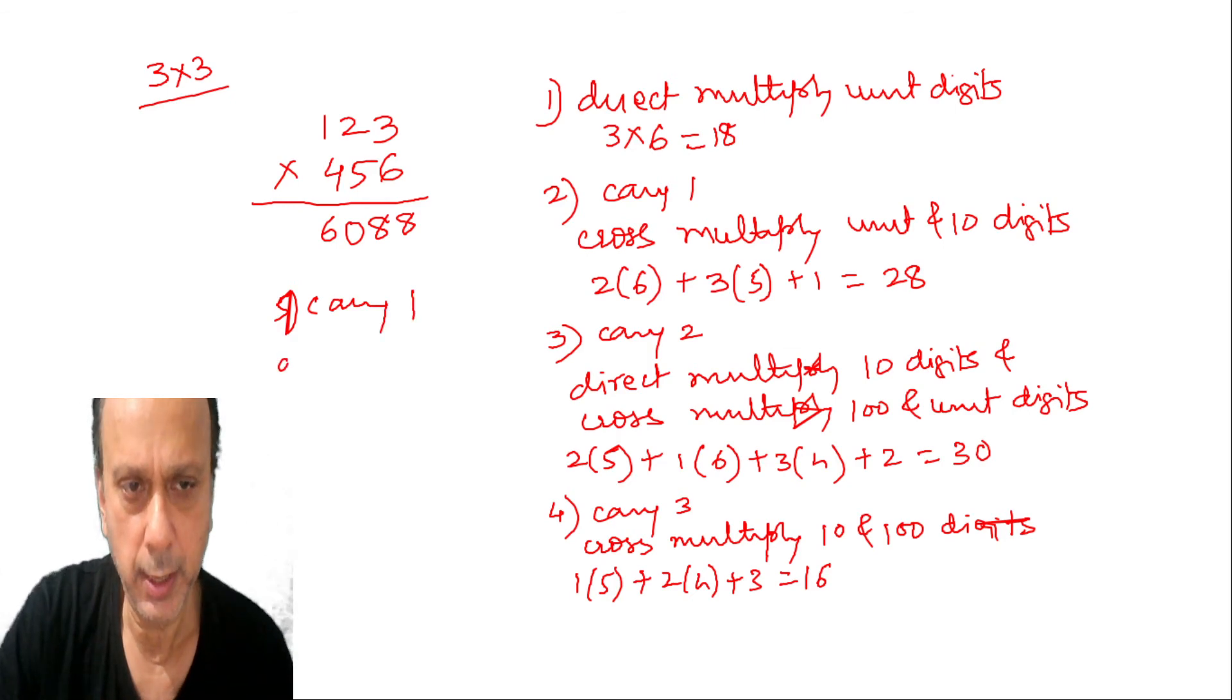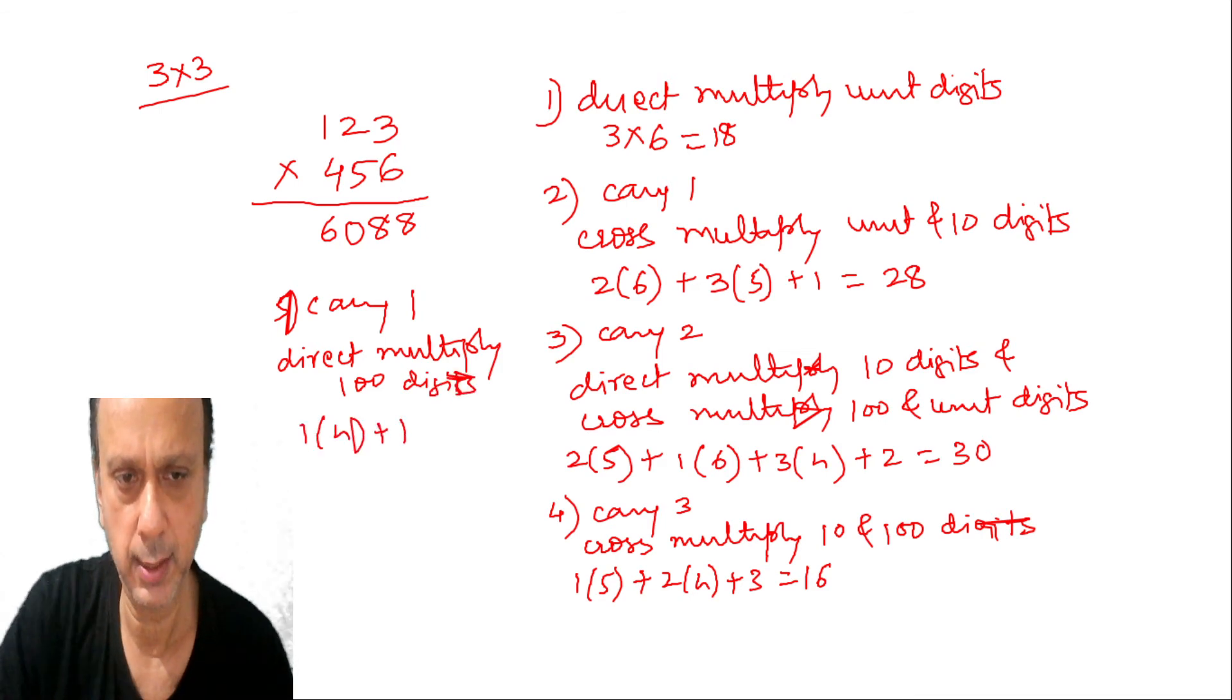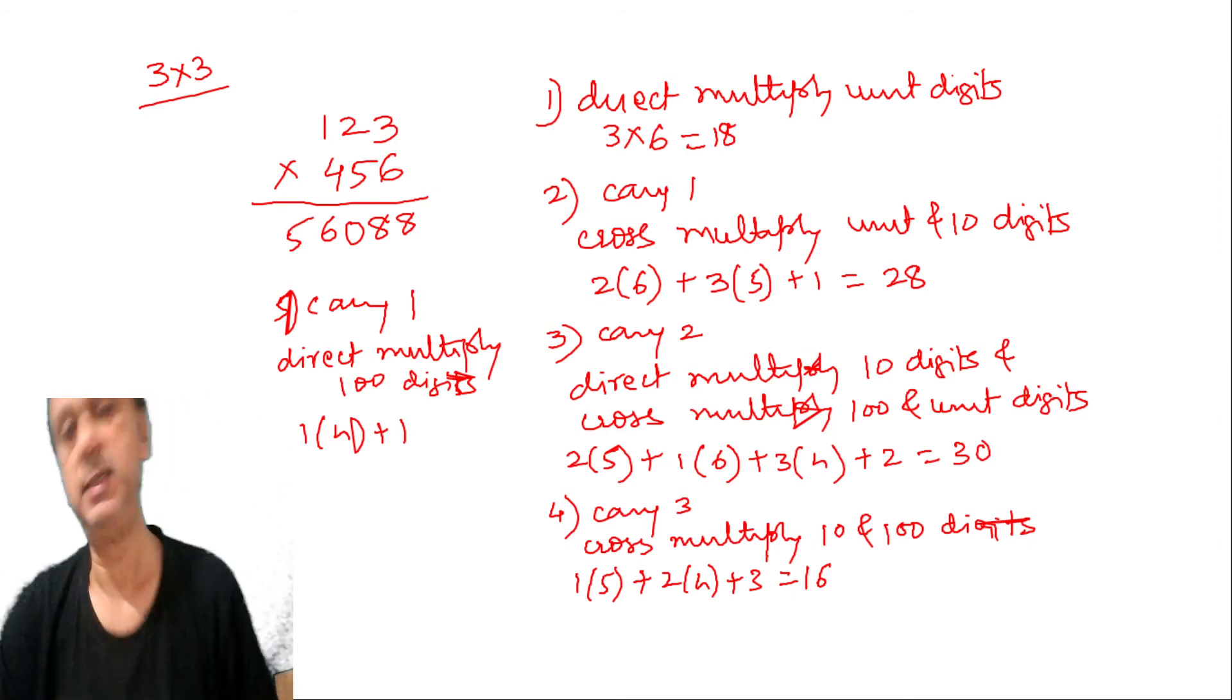Direct multiply 100 digits. So it is 1 into 4 and add 1. You get the answer in just a single line and this is a very astonishing method.